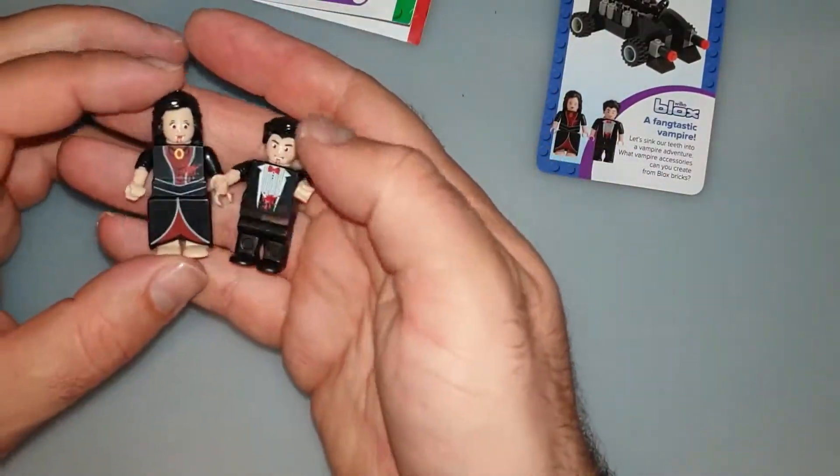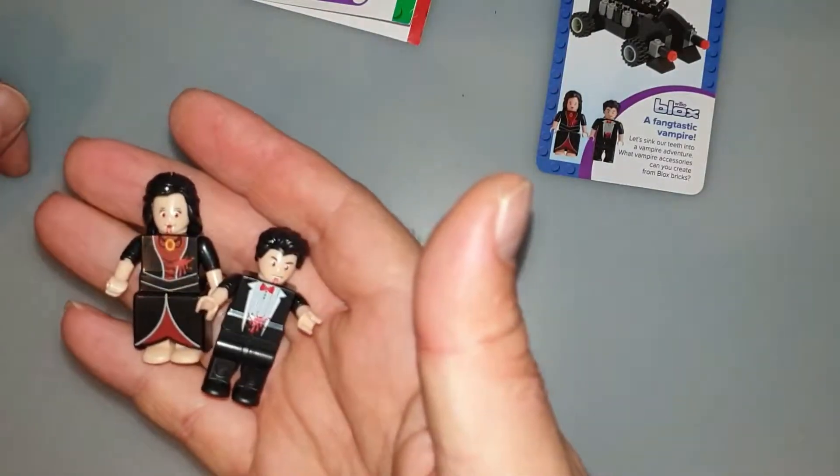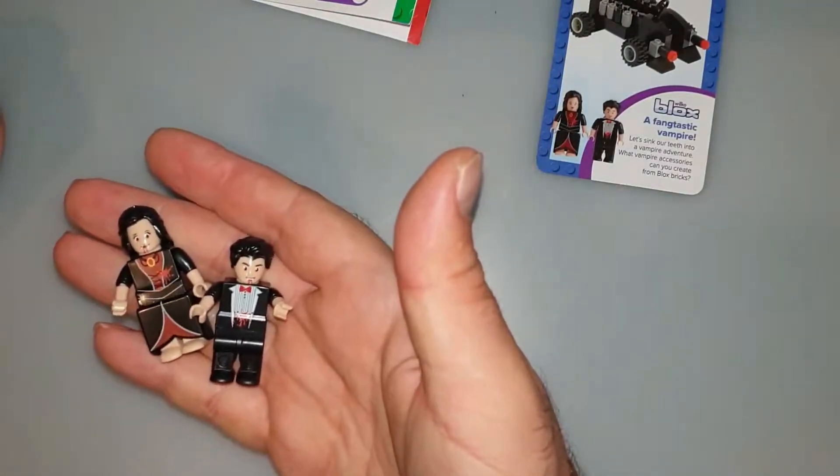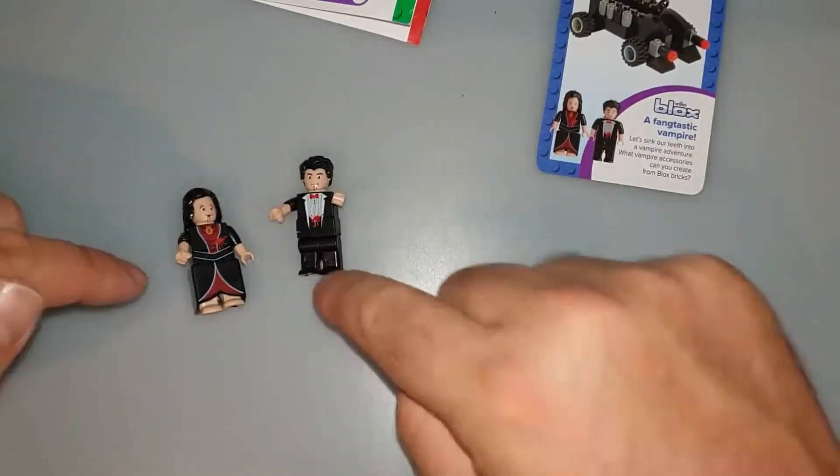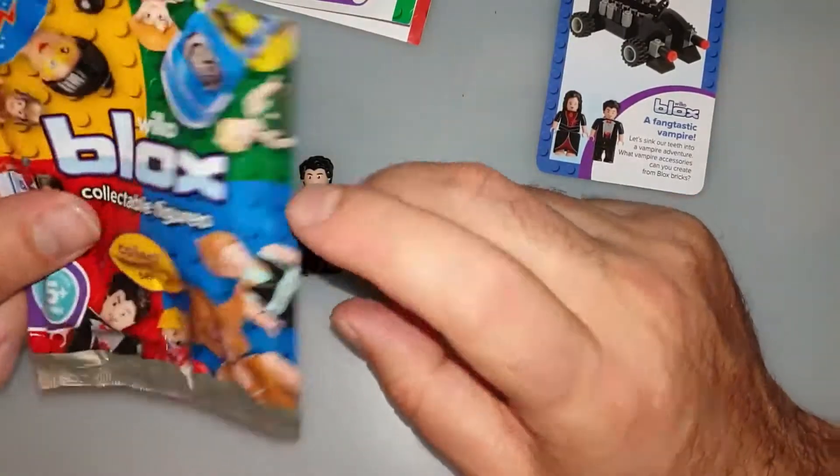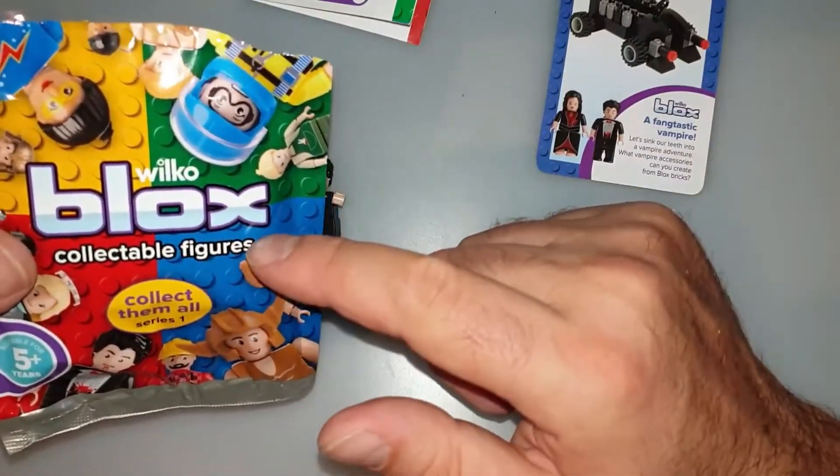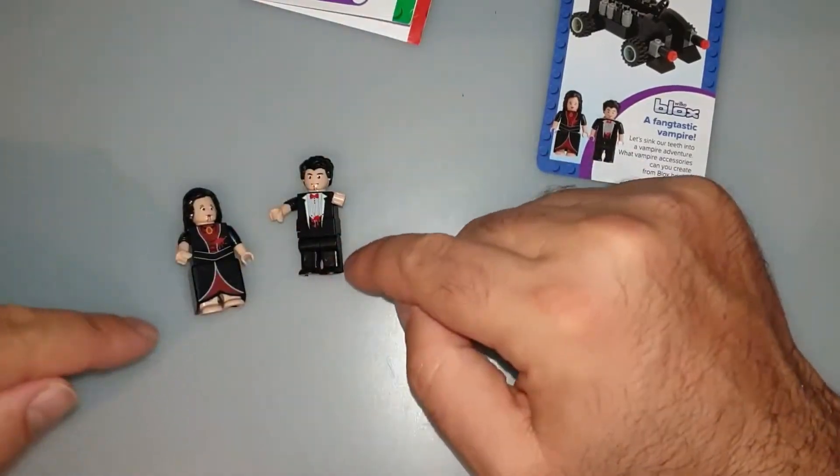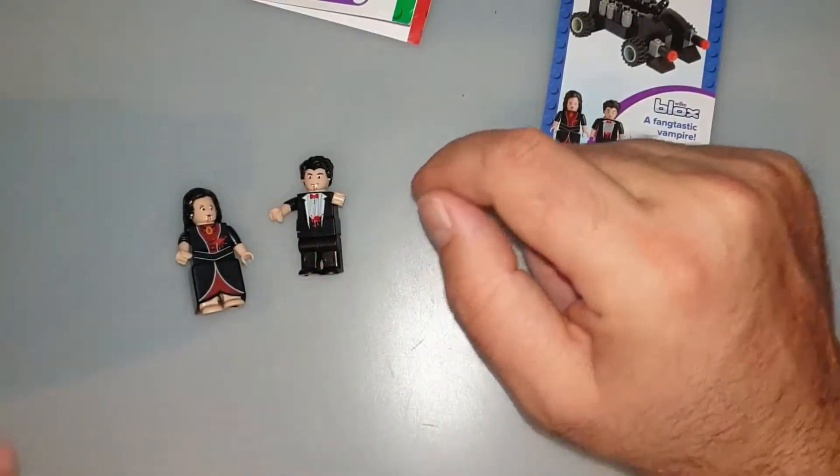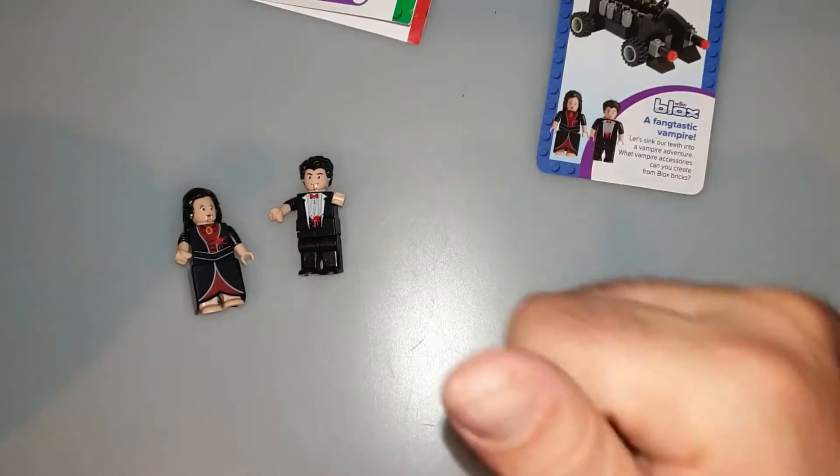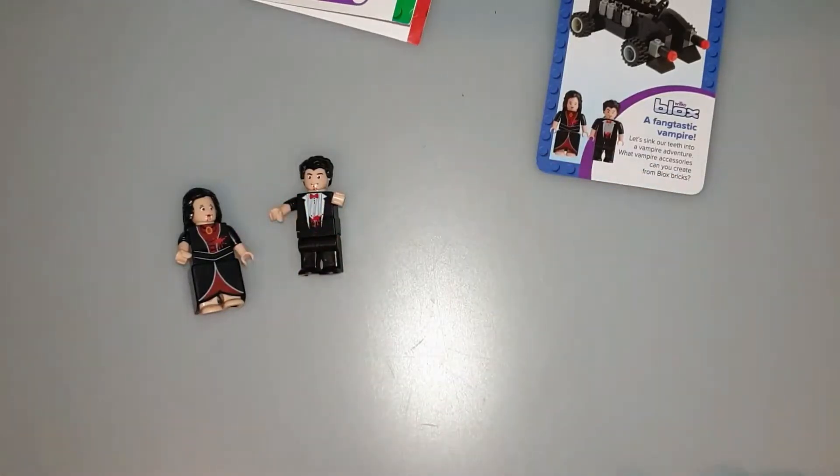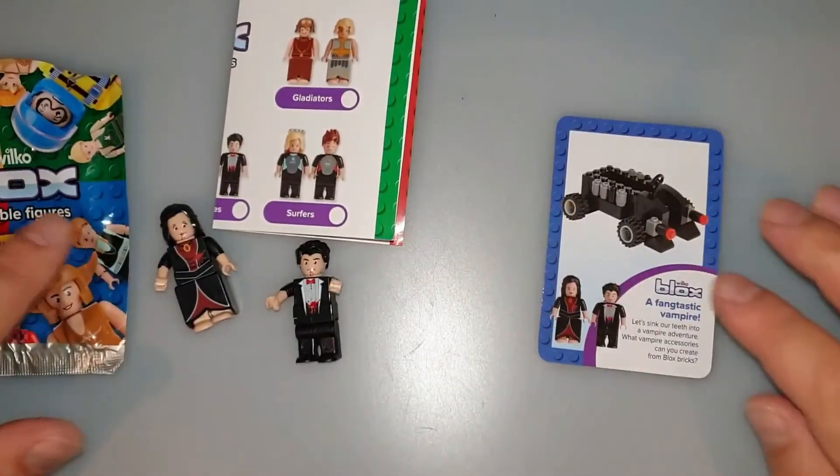They look cool. And they only cost a pound. So I would say it's a bargain. What do you think? Are you collecting these? Let me know. And do you have any other Wilco Blocks set? And don't forget suggestions for their names. Thanks for watching, guys. And I hope to see you in the next video. I'm looking forward to your comments. Bye-bye.